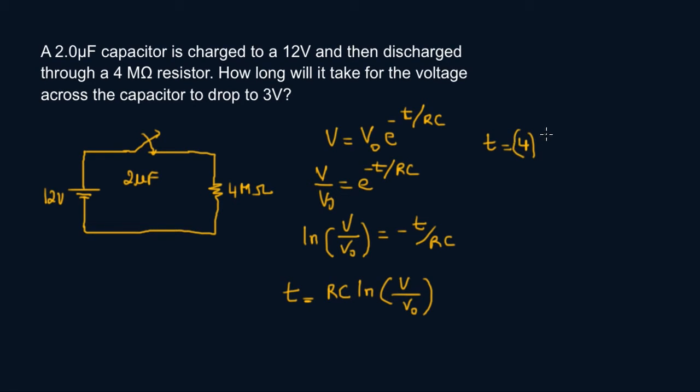Times the capacitance, that's 2. These actually cancel out because mega and micro - mega is 10 to the power of 6, micro is 10 to the power minus 6, so eventually they cancel out. And then ln of voltage is 12 volts dropping to 3 volts.